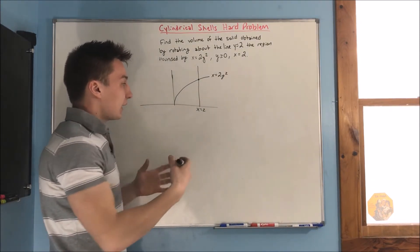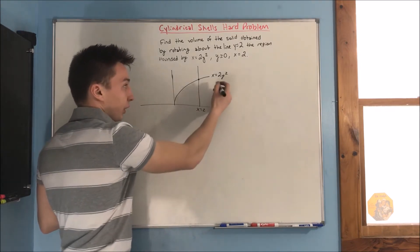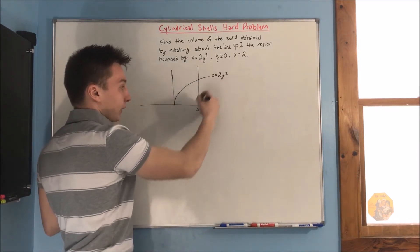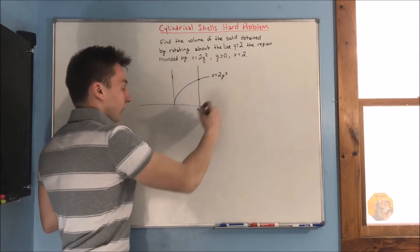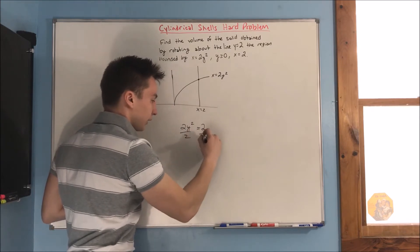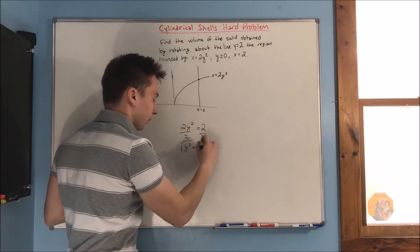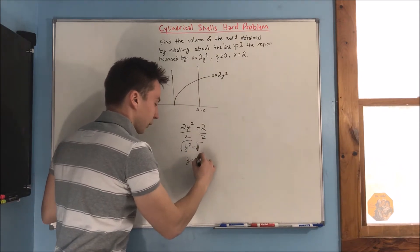we're just going to set these guys equal to each other, and figure out what our y value is going to be. So, we have x equals and x equals, so we set them equal to each other, we have 2y squared equals 2, divide by 2, gives us y squared equals 1, and take the square root of both sides, y equals plus or minus 1.